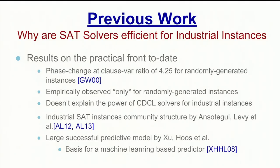There have been some previous works on defining the structure of a SAT instance. In the early 2000s, work showed that random instances with a clause-to-variable ratio of approximately 4.25 were particularly hard for SAT solvers. Unfortunately, this was only true for random instances and did not explain the power of CDCL solvers for industrial instances. An additional result showed that industrial instances have a community structure, and finally, there was a large successful predictive model that became the basis for a machine-learning-based predictor.